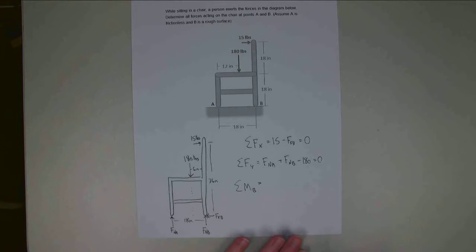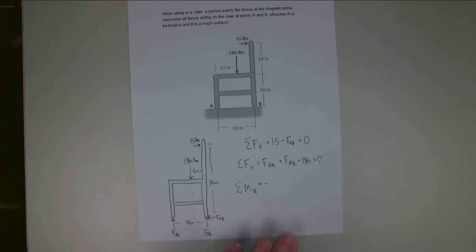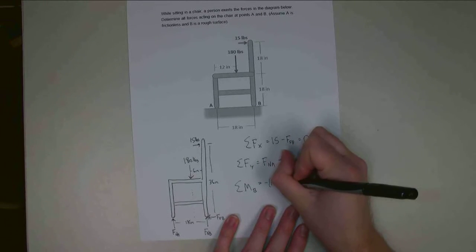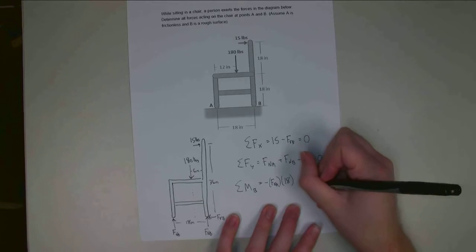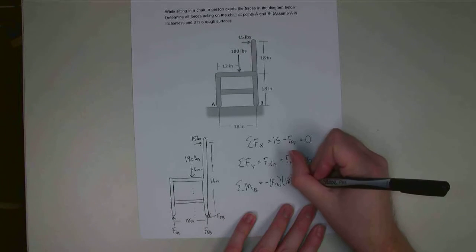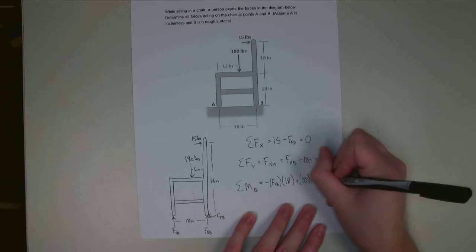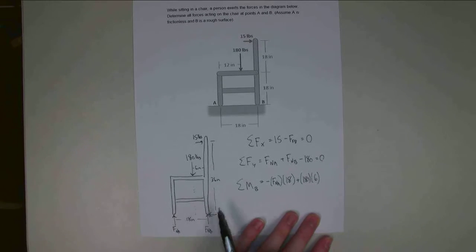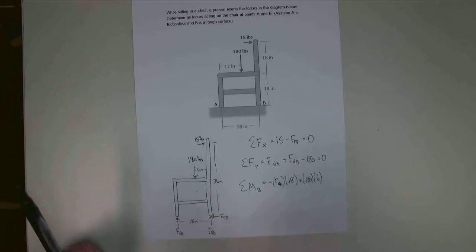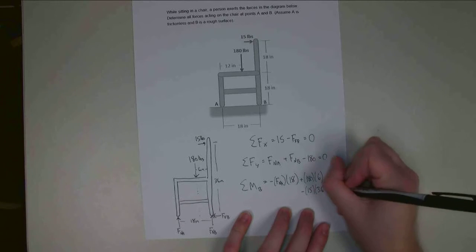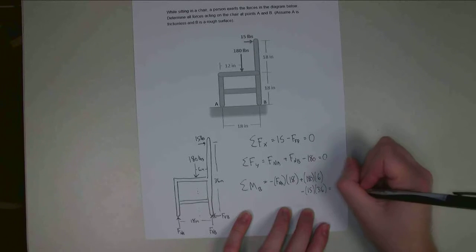Alright, so the moment of the normal force A, that is going to be negative. It's going to cause a clockwise rotation. And it'd be F_A times 18. And then this 180-pound force, that would cause a counterclockwise rotation. That's going to be positive. So plus 180 times 6. And then last but not least, I've got this 15-pound force up here, 36 inches away. That would cause a clockwise rotation that's going to be negative. So minus 15 times 36. And that whole equation is equal to 0.